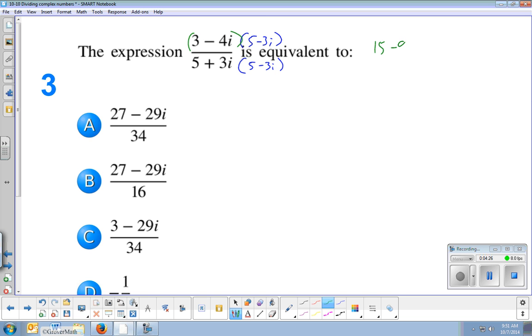3 and negative 3i is negative 9i. Negative 4i and 5 is negative 20i. And then negative 4 and negative 3 is plus 12i squared. That's going to end up being a minus 12 because of the i squared. 15 minus 12 is 3, and a minus 29i. Divided by.